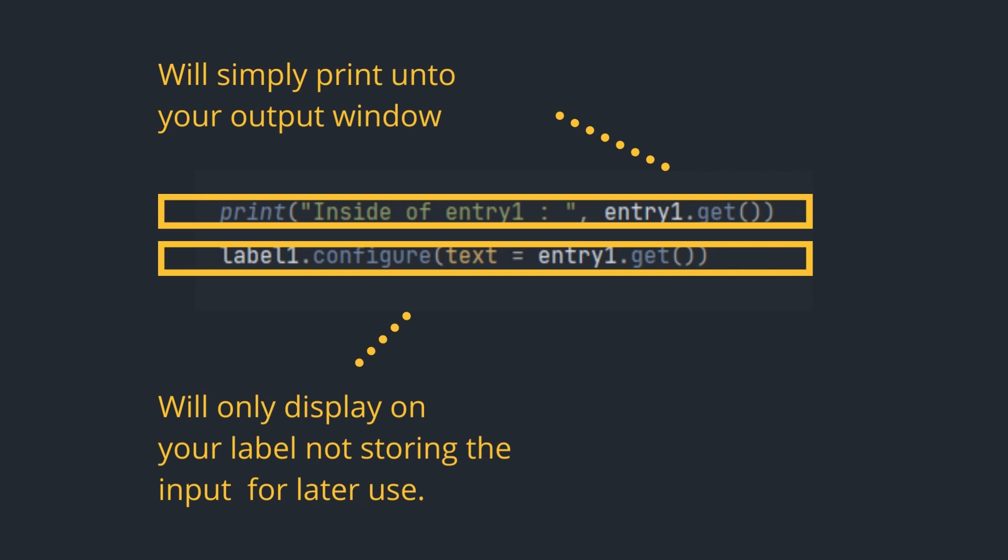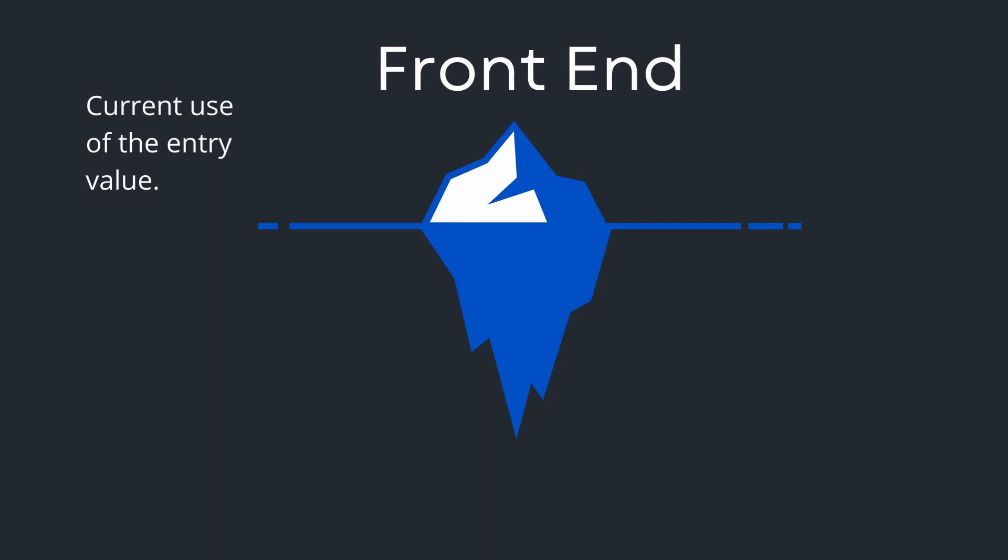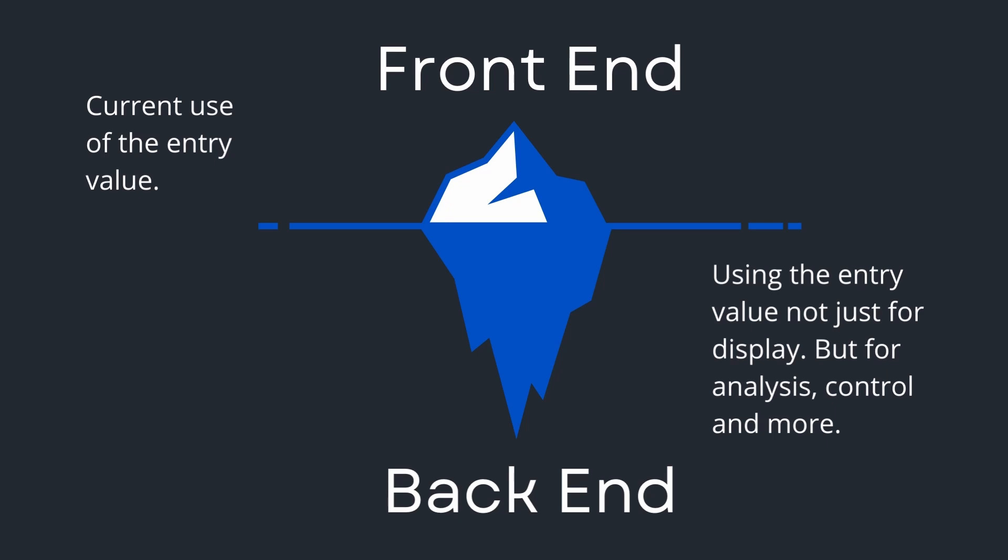This is not enough for a good use of the entry widget and its value. Why? Because we're not actually storing the value of the input from our user for later use. This brings me to the iceberg analogy — our current use of the entry widget is simply on the front end, the top of the iceberg. Down below is the back end, where we might need the input for analysis, for control, and much more.